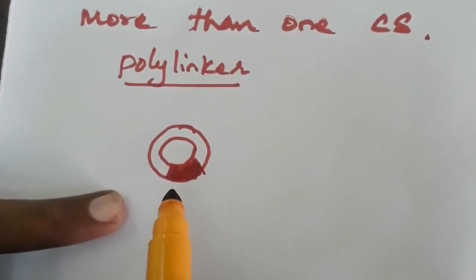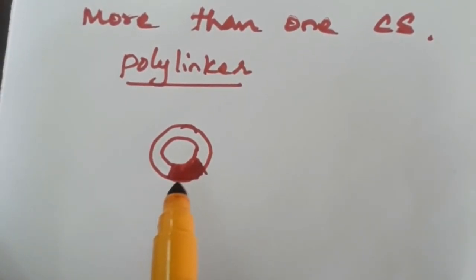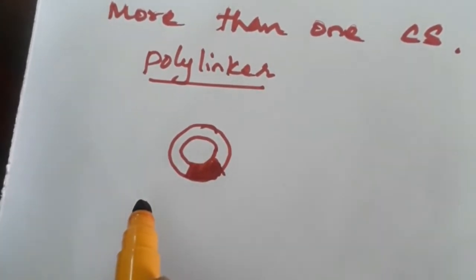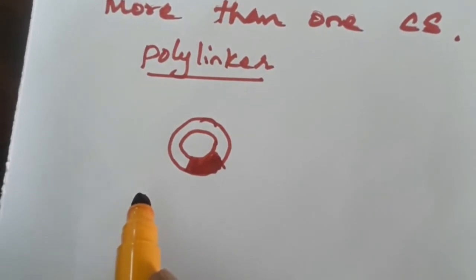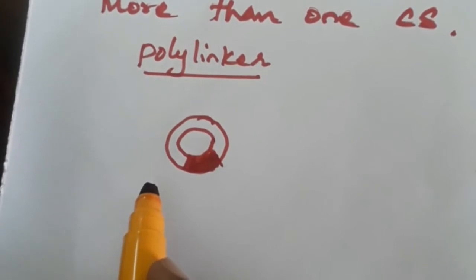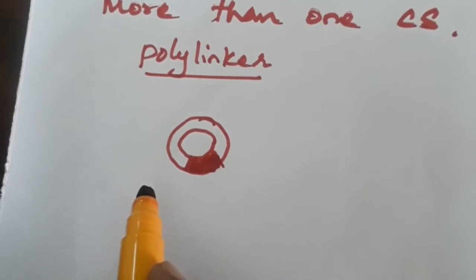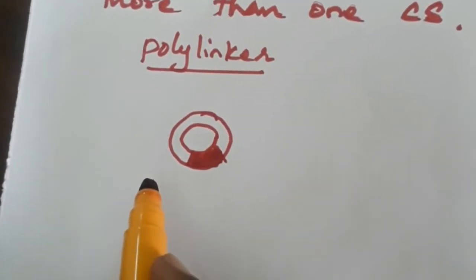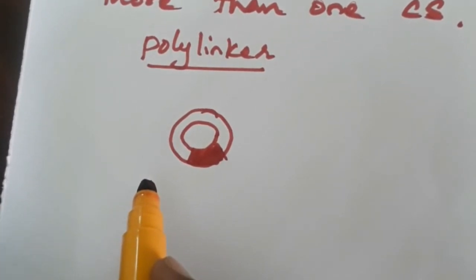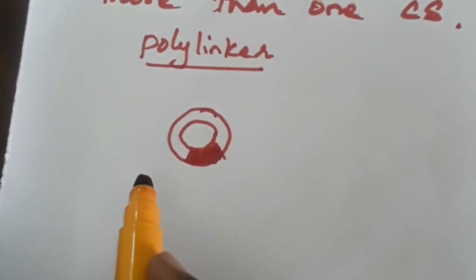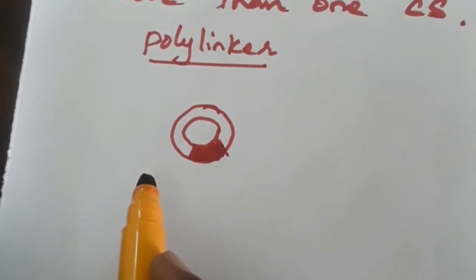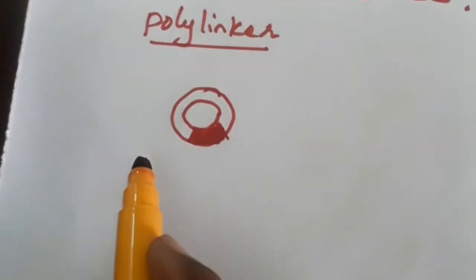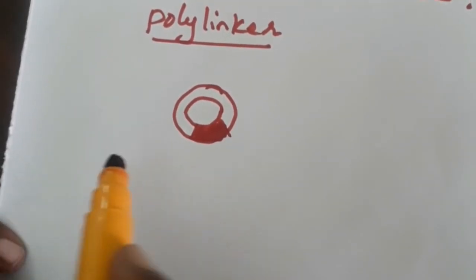If only one cloning site is present, then it is called a monolinker. This is very important — to identify at which sites different types of restriction enzymes can be used at the cloning region. Our desirable restriction enzyme can be used if a plasmid has more than one cloning site. From different bacteria we can isolate restriction enzymes, and those regions are identified in a plasmid. For the specific introduction of DNA, a specific restriction enzyme can be used. Understanding this cloning site is very essential — it is a very important property exhibited in the plasmid structure.